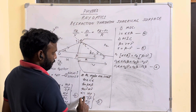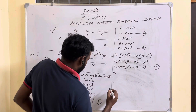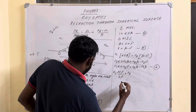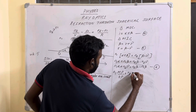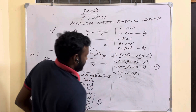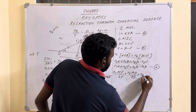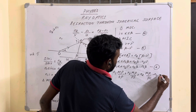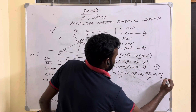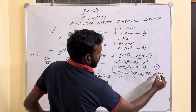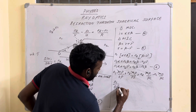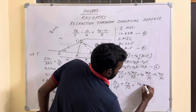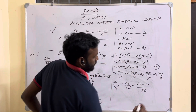Now substitute the values of α, β, and γ from equation 3 into equation 6. After substitution, MP cancels on both sides, giving: n1/OP + n2/PI = (n2 − n1)/PC. Let this be equation number seven.